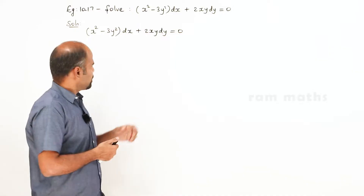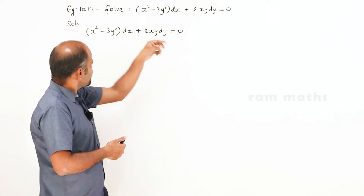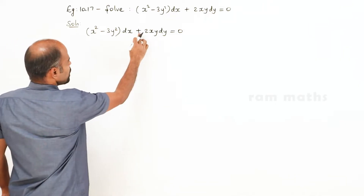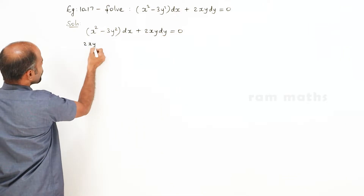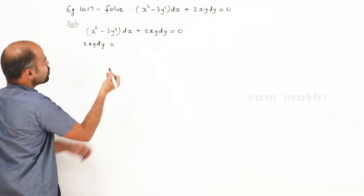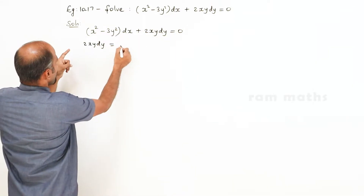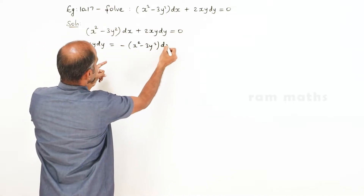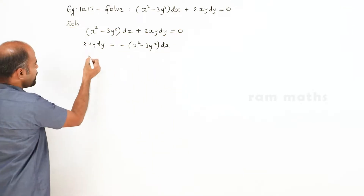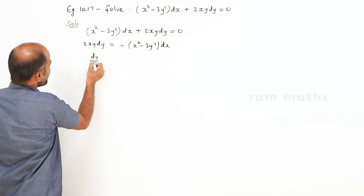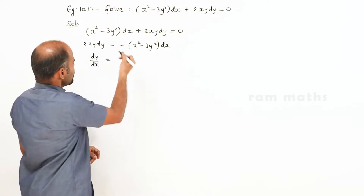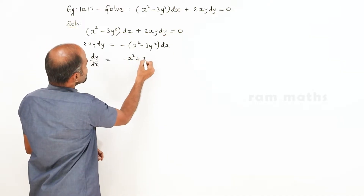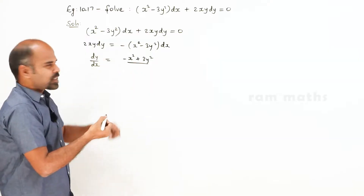Example 10.17. We have to solve the differential equation. Moving terms to opposite sides: 2xy dy minus (x² - 3y²) dx equals 0. Dividing by dx gives dy/dx equal to minus x² plus 3y² all divided by 2xy.